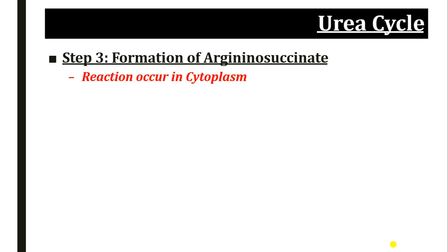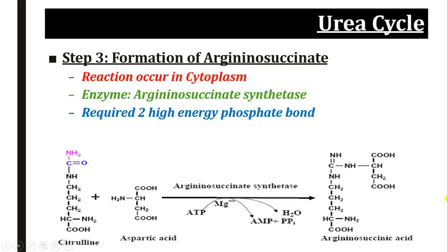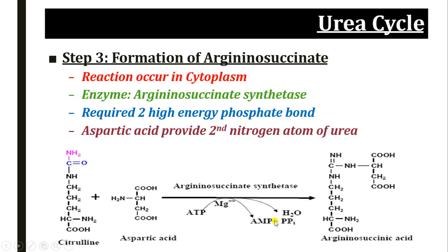In the third step, there is formation of argininosuccinate, also known as argininosuccinic acid. This reaction occurs in the cytoplasm, where citrulline coming from the mitochondria reacts with aspartic acid in the presence of argininosuccinate synthetase enzyme. This reaction utilizes two high-energy phosphate bonds, so ATP is converted to AMP. Here, the amino group of aspartic acid provides the second nitrogen atom of urea.